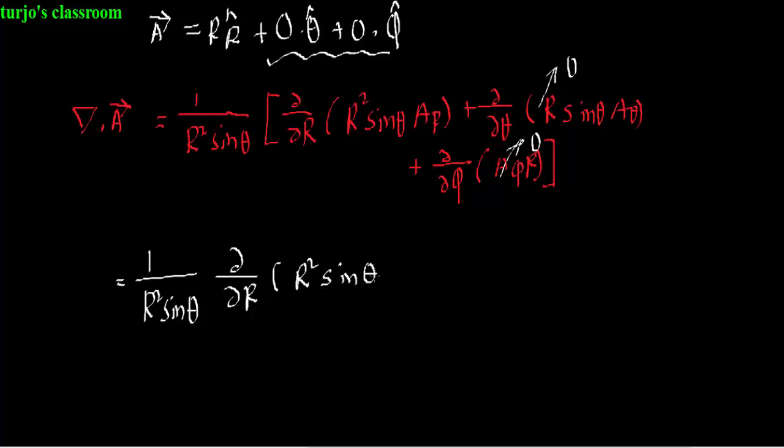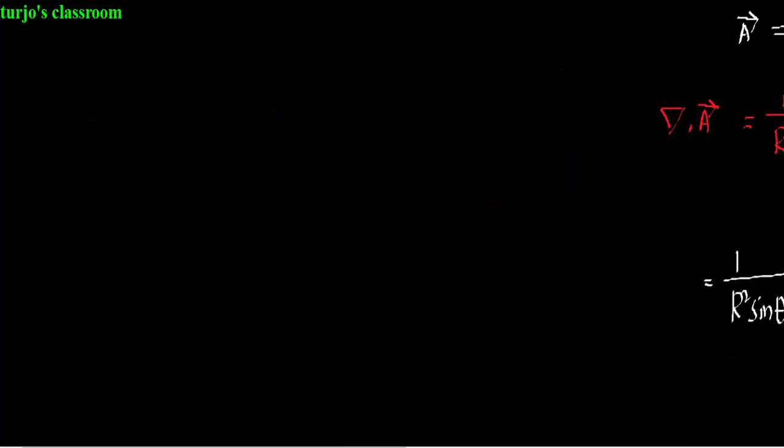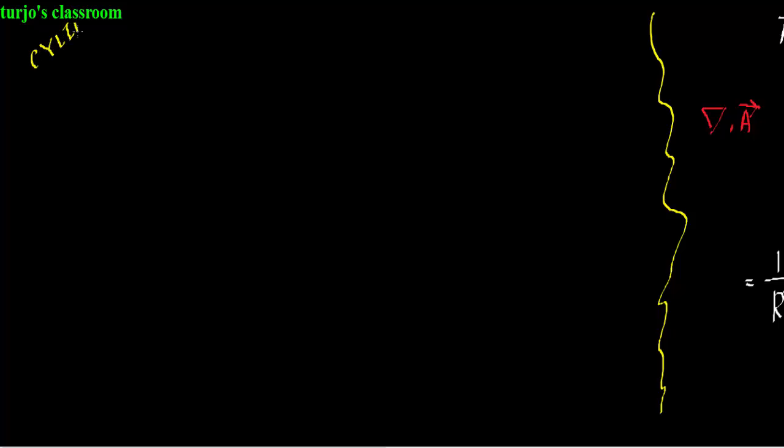And we all know in partial differentiation, all the variables except for the variable with respect to which the differentiation process is performed are treated to be constant. Therefore, finally, our answer will be three: that's one by r squared into three r squared, that is three. It's very important - the divergence of any vector field is a scalar quantity.